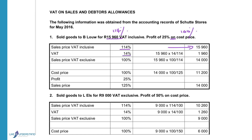VAT is 14% and the sales price excluding VAT is 100%. To calculate the VAT: the percentage we want (14) divided by the percentage we know (114), times the amount, gives us 1,960. To calculate the sales income, 100 divided by 114 times the amount gives us 14,000.